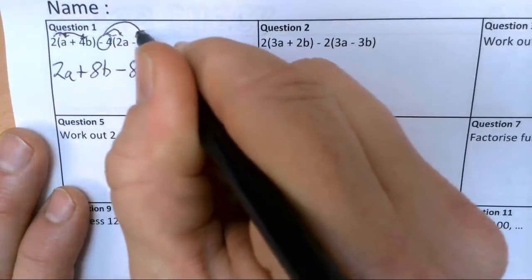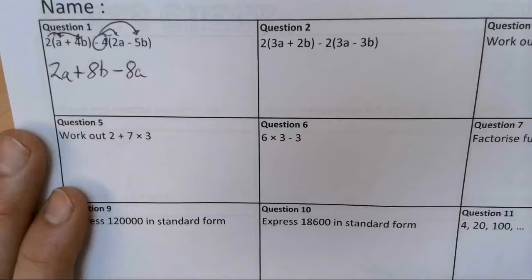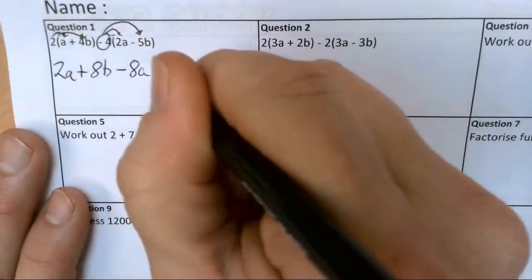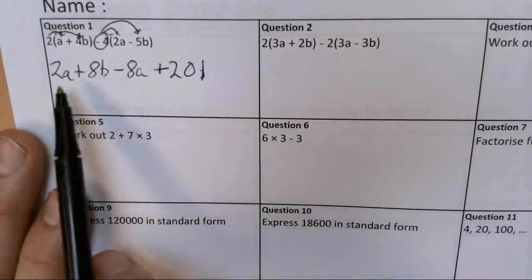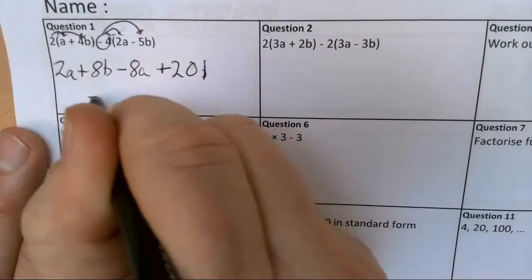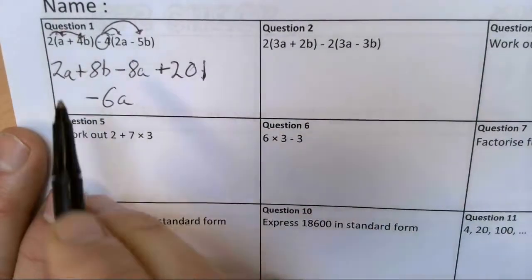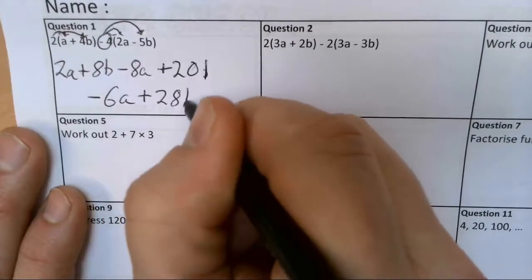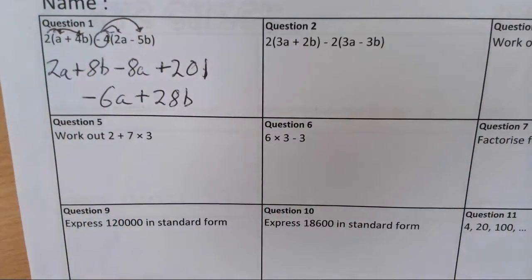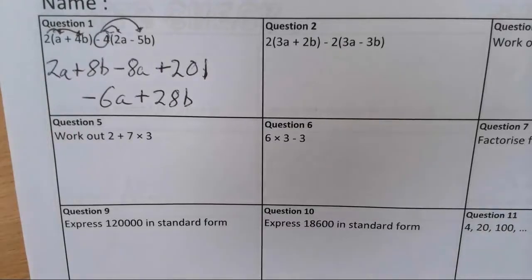And now this is the bit where if you are going to make a mistake, you'll make it here. Minus 4 times by minus 5b is going to give me plus 20b. So I've got 2a take away 8a, which is minus 6a, and I've got 8b plus 20b, which gives me plus 28b. You could have that as 28b minus 6a, that would also be absolutely fine.